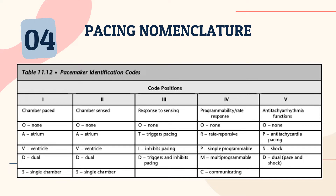Moving on to some pacing nomenclature. There are coded positions 1 through 5, with 1 through 3 being what you would typically hear about. Position 1 is the chamber paced: O is none, A is atrium, V is ventricle, D is dual, and S is single chamber. Position 2 is the chamber sensed, using the same nomenclature. Position 3 is the response to sensing: O is none, T triggers pacing, I inhibits pacing, and D triggers and inhibits pacing.